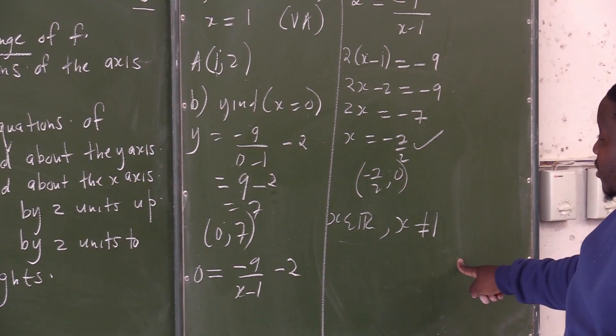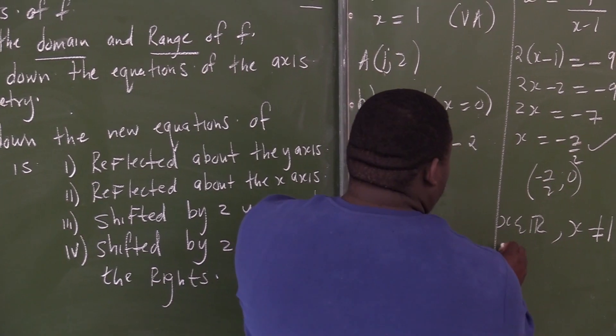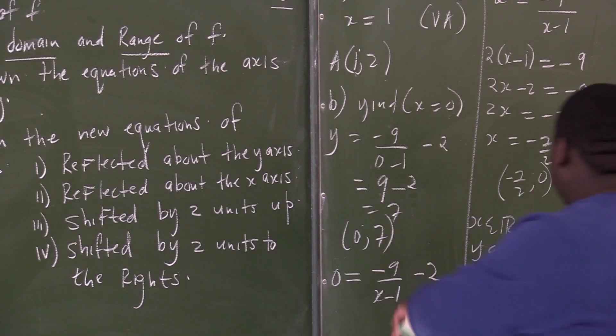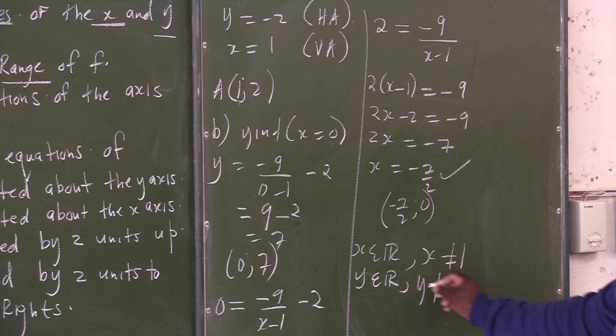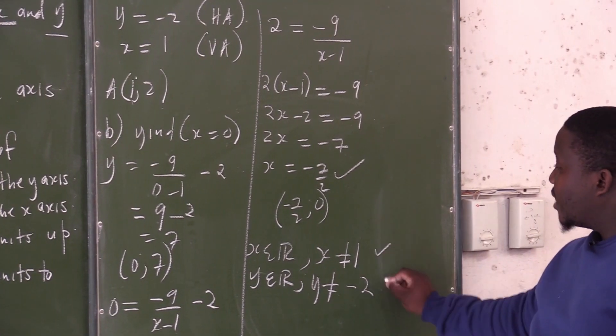Let's check here. What is going to be my range? It will say y is an element of real numbers, but y must not be equal to the asymptote. So y is an element of real numbers, negative 2.